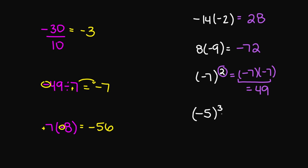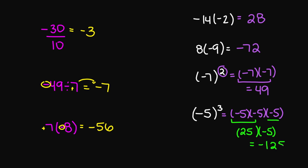And then negative 5 cubed. This is going to be negative 5 times negative 5 times negative 5. Negative 5 times negative 5 is a positive 25. However, you now have 25 times your negative 5, and this is going to give you a negative 125.